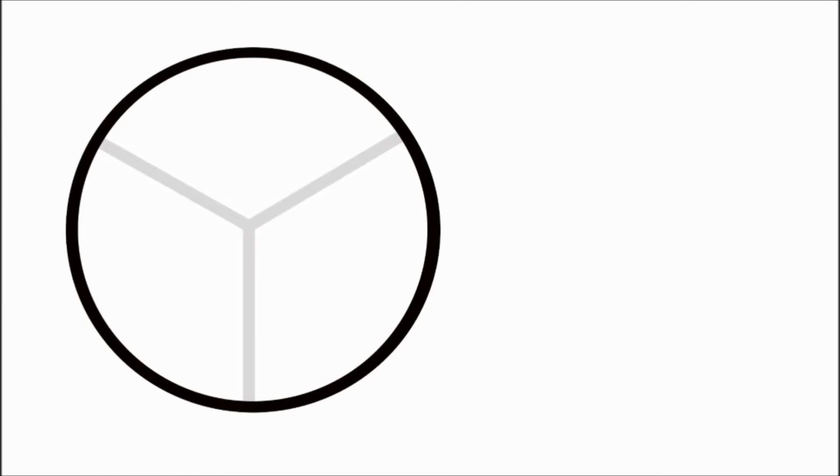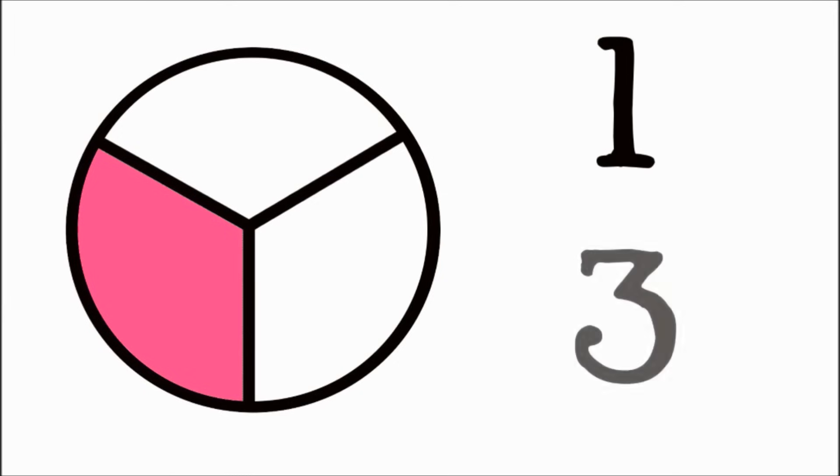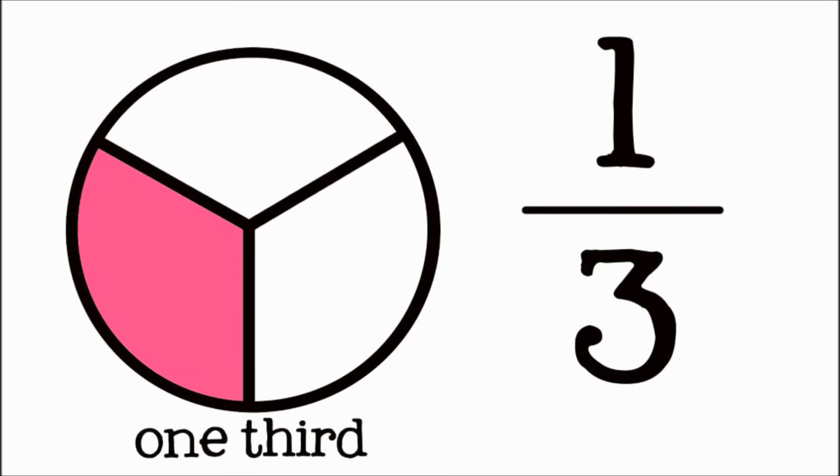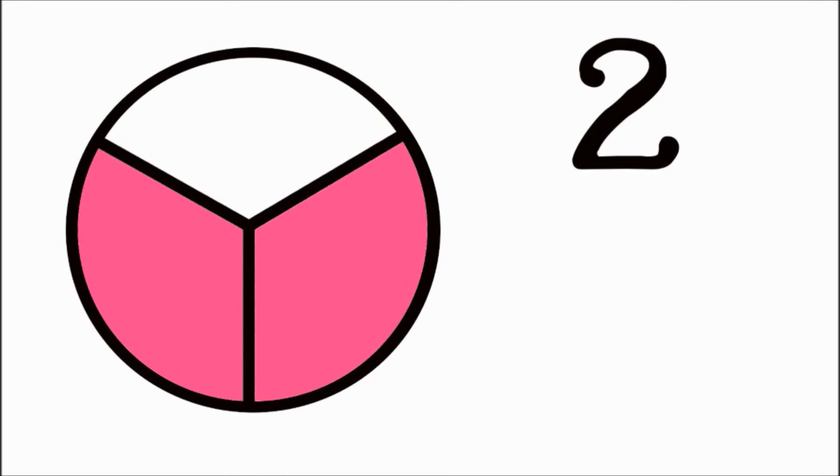When something is divided into three equal parts, we call them thirds. One piece, out of three total pieces, is one third. Two pieces, out of three total pieces, is two thirds.